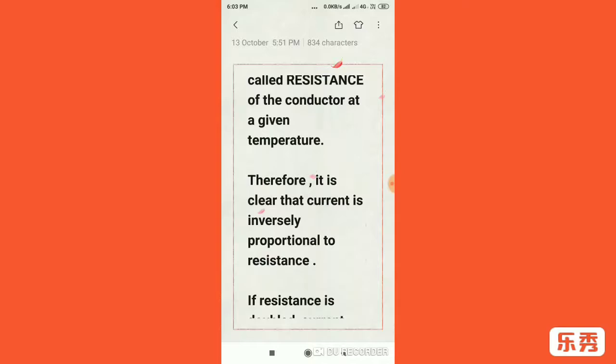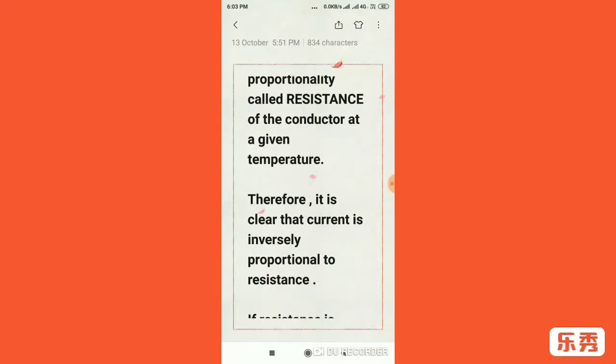Therefore it is very clear that current is inversely proportional to resistance. What this means is, for example, if resistance is doubled then current gets halved. If resistance is halved then current gets doubled, because they are inversely proportional.